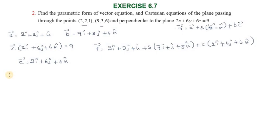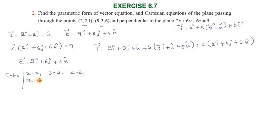Next is the Cartesian equation of the plane for two given points. The Cartesian equation format is the determinant with rows: (x minus x1, y minus y1, z minus z1), (x2 minus x1, y2 minus y1, z2 minus z1), and (c1, c2, c3) equal to zero.